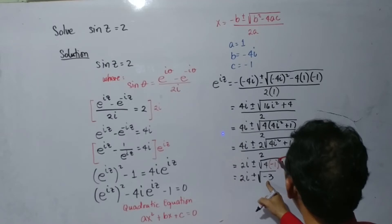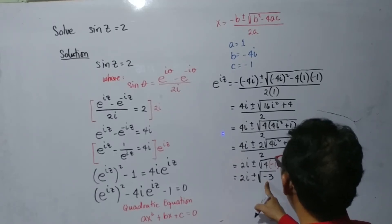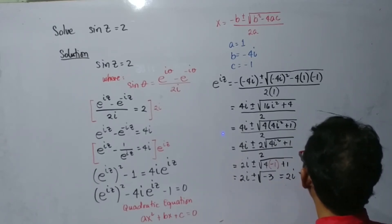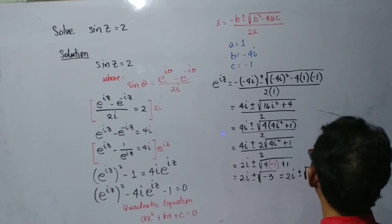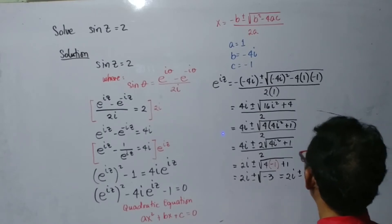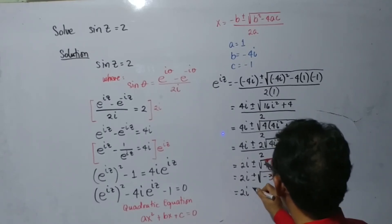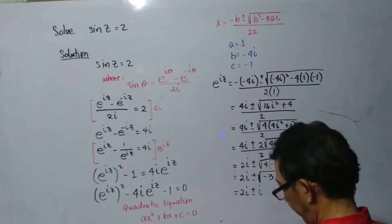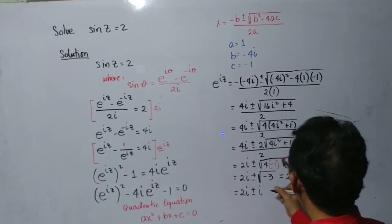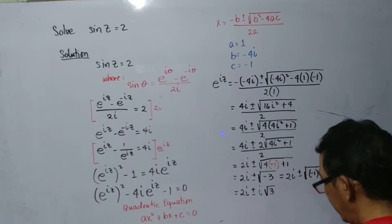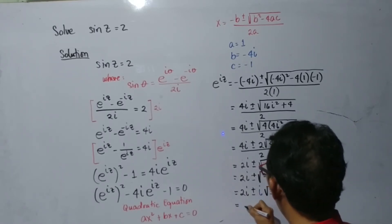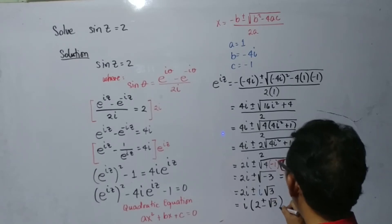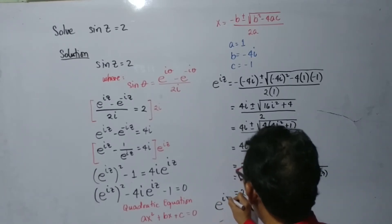Remember that the square root of negative 1 is i. So we have 2i plus or minus i times the square root of 3. Factoring out i, we have i times 2 plus or minus the square root of 3. That is our e to the iz.